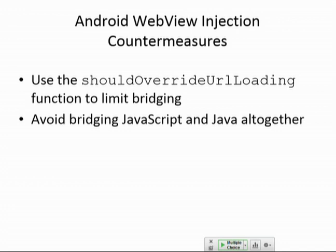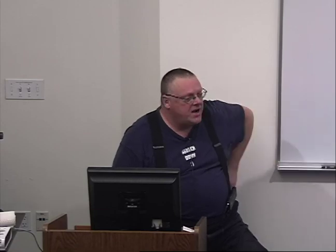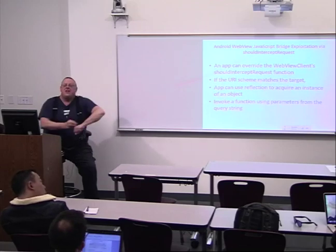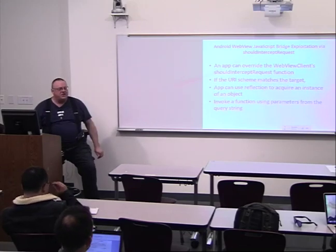Here's a countermeasure: limit bridging. The way to be safer is to not use the convenience feature that saves you money — but of course nobody will go for that. Bridging JavaScript and Java is intrinsically dangerous but provides a lot of functionality. Most companies take the attitude that if it makes a better product, they'll do it and security engineers will work harder to fix the problems. You can exploit this using 'shouldInterceptRequest' — you can override this function, and an app can use reflection to acquire an instance of an object and run Java code that is part of an app, injecting parameters into it. If your app can write a file, dial the phone, or erase things, the web page can now do all of that.